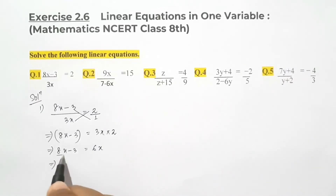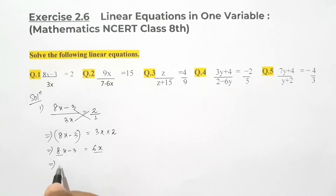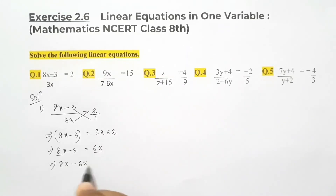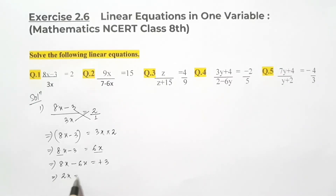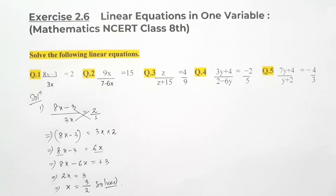Now 8x and 6x are the same type of term — both are variable terms containing x. I'll take 6x to the left side of the equation, so the plus becomes minus. And this 3 is a constant term, so minus 3, if we take to the right side, it becomes plus 3. So 8x - 6x = 2x = 3, and ultimately x = 3/2. This 2 will come as a divide and it is solved.